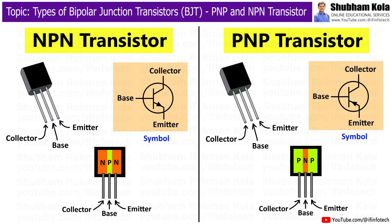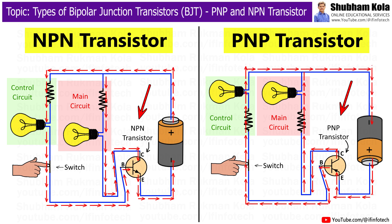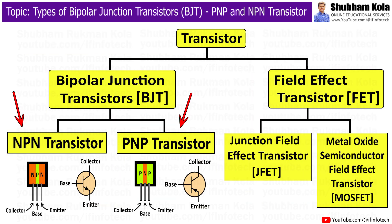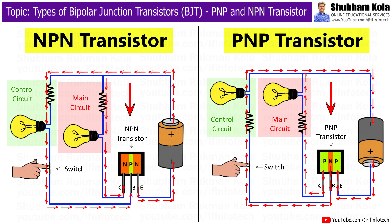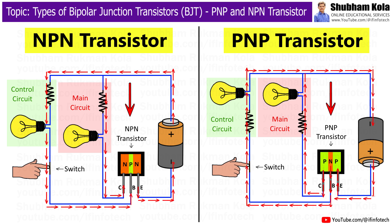In this video, we are going to learn about the working of PNP transistor and NPN transistor. The PNP and NPN transistors are two types of transistors belonging to a category called Bipolar Junction Transistors. The transistor is a semiconductor device that controls the flow of electricity in a circuit or increases the strength of a weak signal in electronic devices.